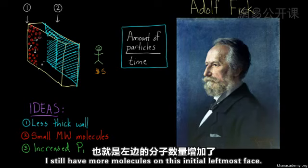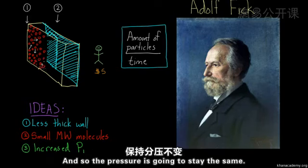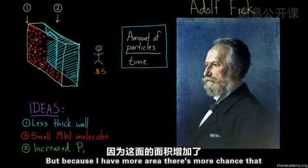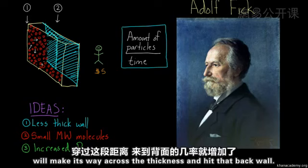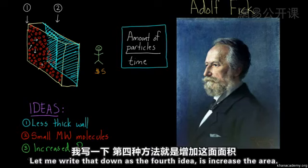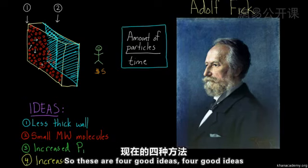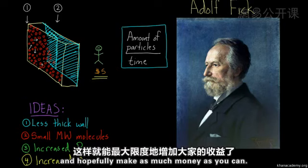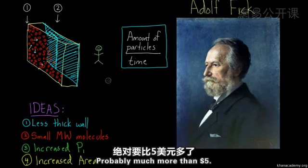And the partial pressure is going to stay the same. So if I expand the area, I still have more molecules on this initial leftmost face. And so the pressure is going to stay the same. This is the P1 that we just got through talking about. But because I have more area, there's more chance that somewhere along this entire area, a molecule will make its way across the thickness and hit that back wall. So this is a fourth idea. Increase the area.